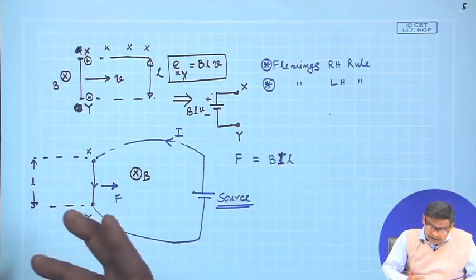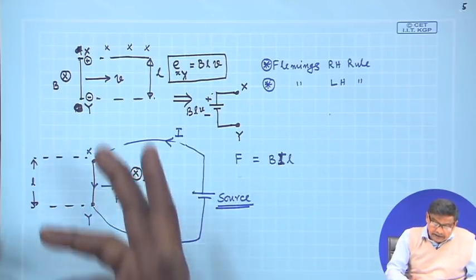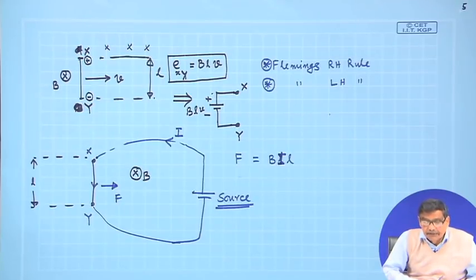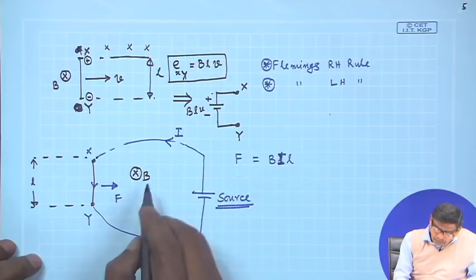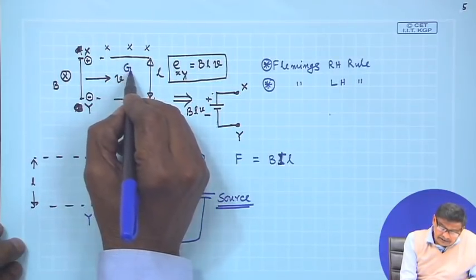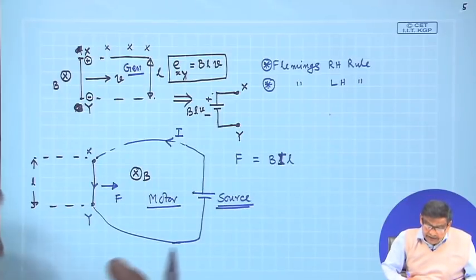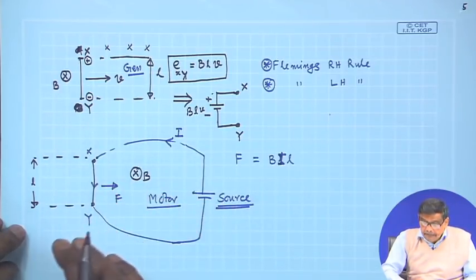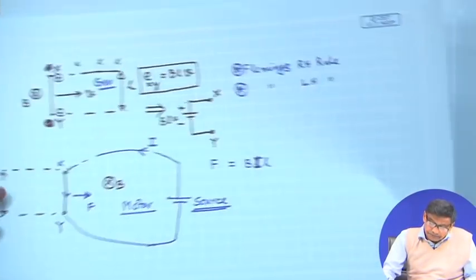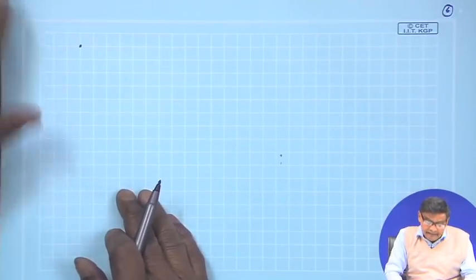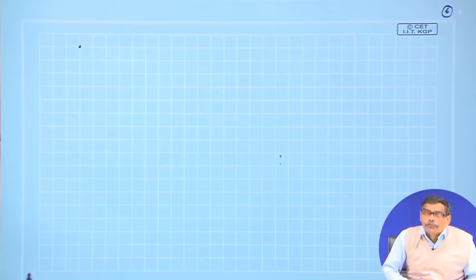Three things are required: a conductor is required; in case you want to generate some voltage you require velocity of that conductor and you require a magnetic field. Absence of any of these three will not generate any voltage. Similarly, to generate some force — this is called motoring, somewhat like a motor where you get some motion — and this is somewhat like a generator where you generate electrical voltage between two points. This is the very fundamental thing.